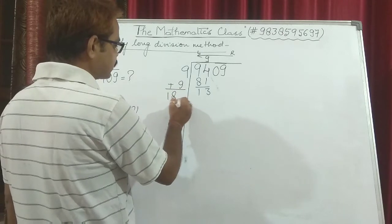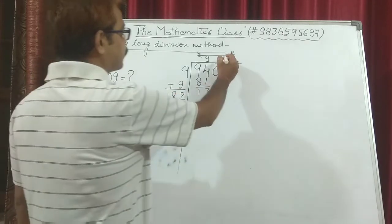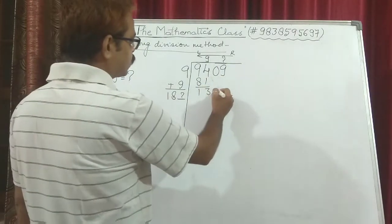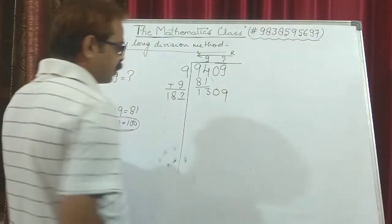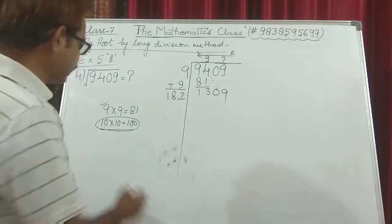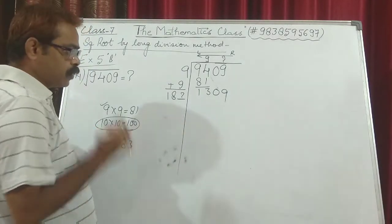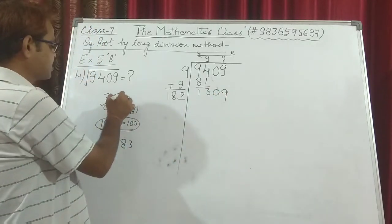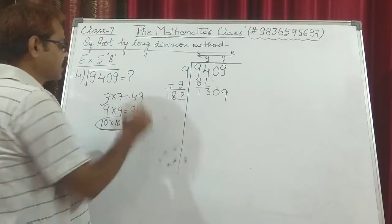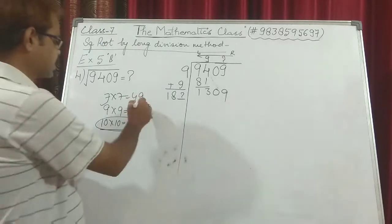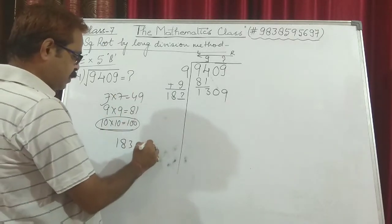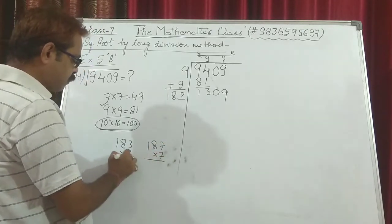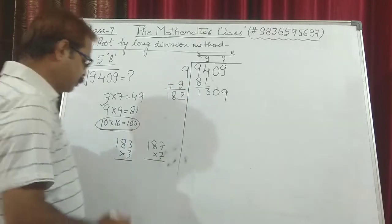18 and something is required. We carry down the whole pair 09, so we now have 1309. We know 3 into 3 is 9, so it could be 183. We also know 7 into 7 is 49, meaning the unit digit is 9, so it could be 187. Let's check — 183 into 3, and also 187 into 7.